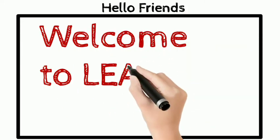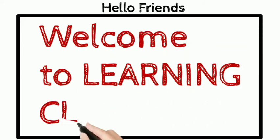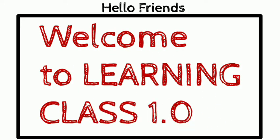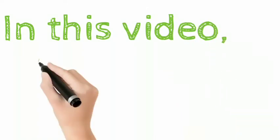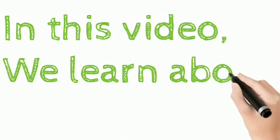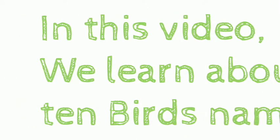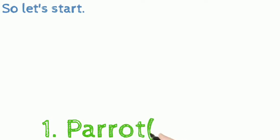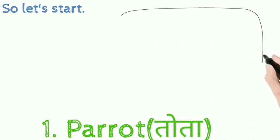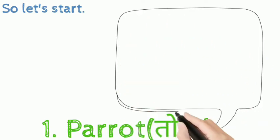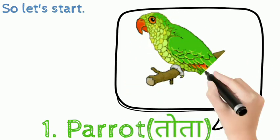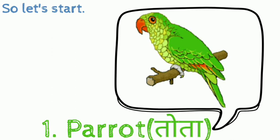Hello friends, welcome to learning class 1.2. In this video we learn about 10 birds names. So let's start. First: Parrot, P A R R O T. Parrot means tootar.